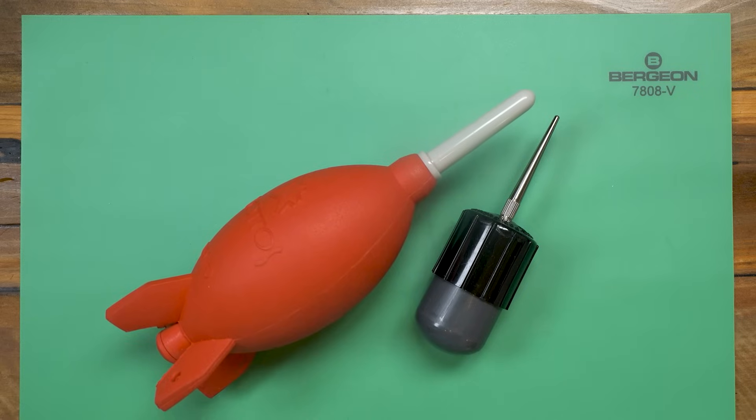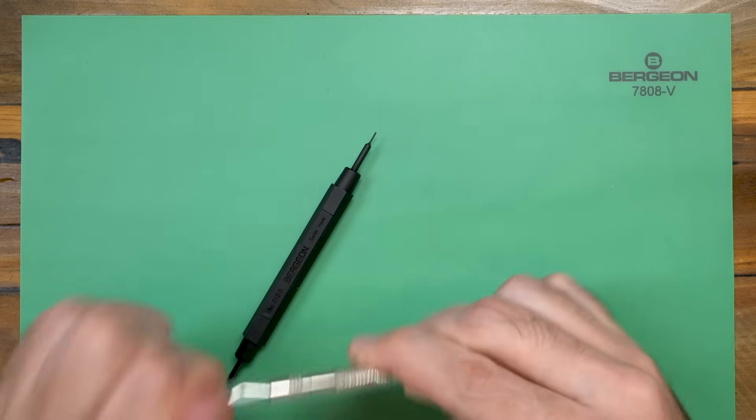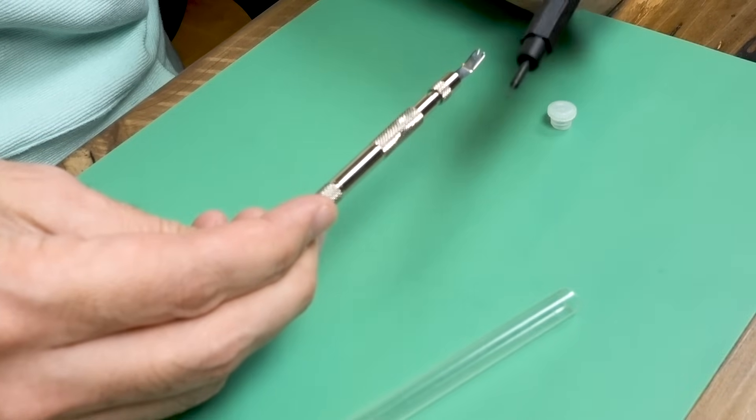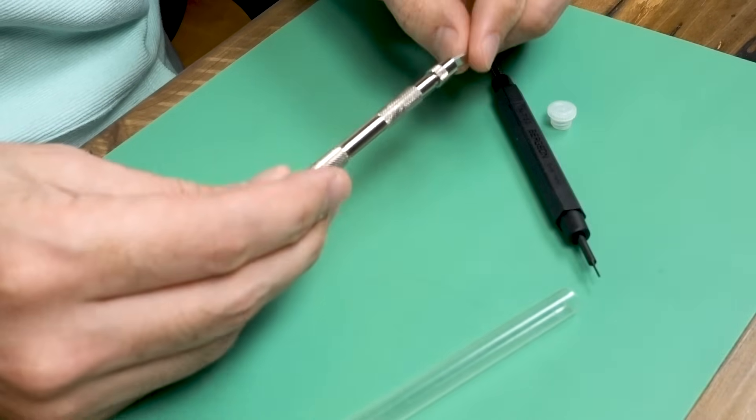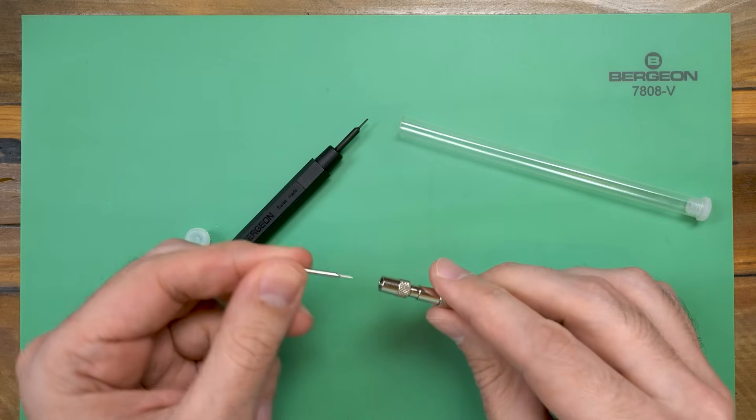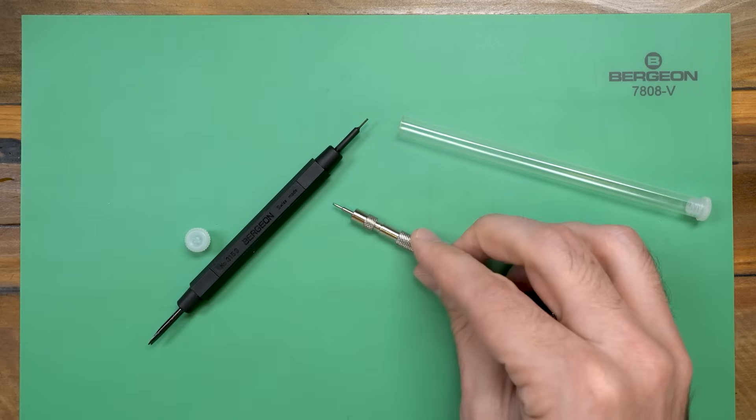If you don't have one already, you'll want a spring bar tool to take the watch band or the bracelet off. Bergeon offers two, one in metal, one in plastic, and they're $18 and they also feature replaceable tips, so basically the tool will last you your lifetime. Or you can get a generic one for about $4 that probably won't last very long.